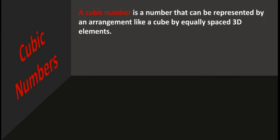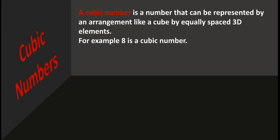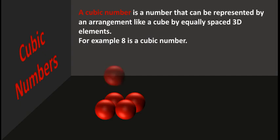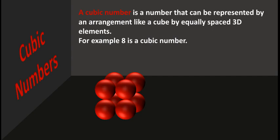Cubic numbers. A cubic number is a number that can be represented by an arrangement like a cube by equally spaced 3D elements. For example, 8 is a cubic number — we can arrange 8 solids in a cube arrangement, so 8 is a cubic number.